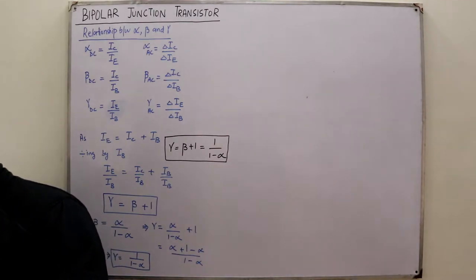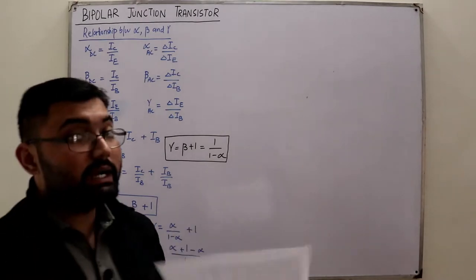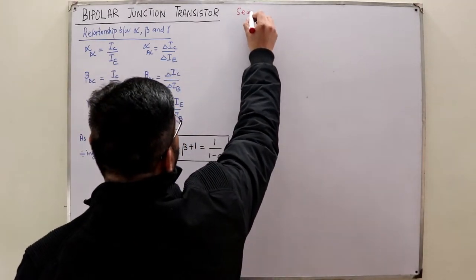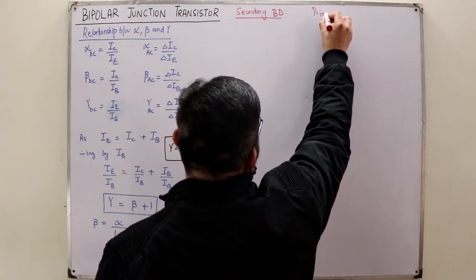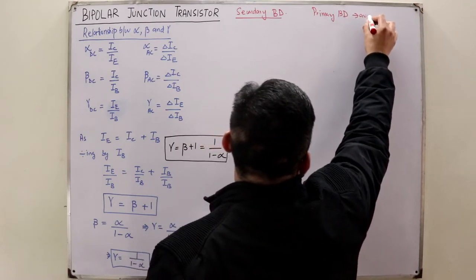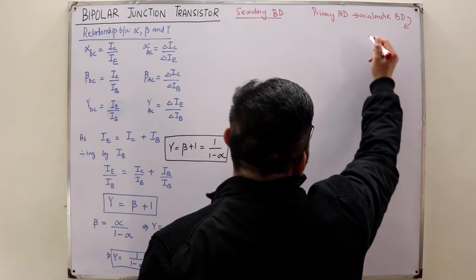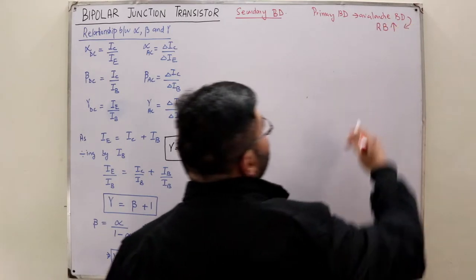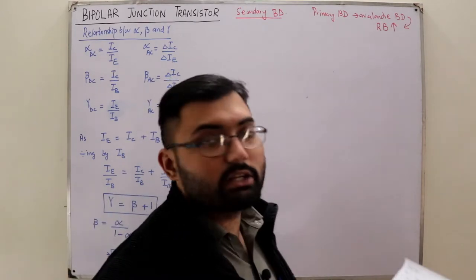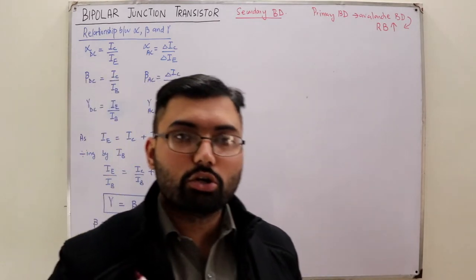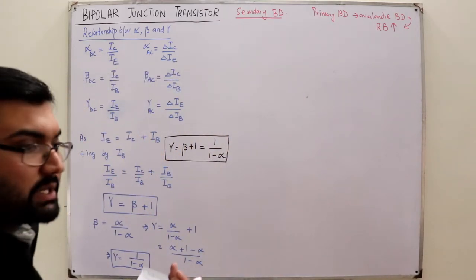The next topic is secondary breakdown. First, there is primary breakdown, which is simply avalanche breakdown — the same avalanche breakdown we have studied previously. This occurs due to an increase in the reverse bias potential to a certain value, causing breakdown depending on the configuration — base-collector, collector-emitter, etc. — when the breakdown voltage is reached.